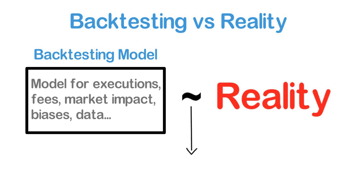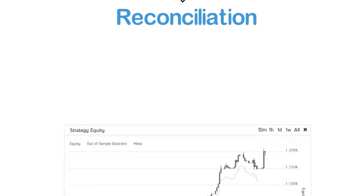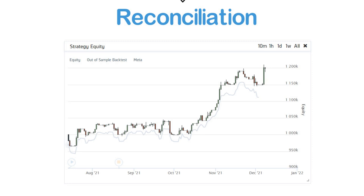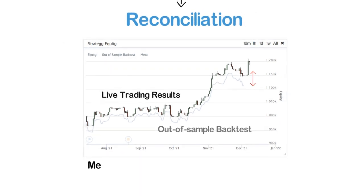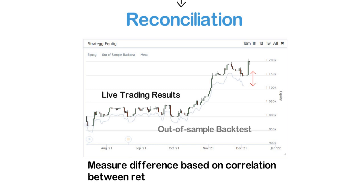The process of understanding this discrepancy is called reconciliation. QuantConnect's live trading page displays the actual performance of your algorithm and a so-called out-of-sample backtest performance. The out-of-sample backtest simply is a backtest that was performed over the same period as that of the live trading performance results. Obviously, this can only be done after letting the algorithm run on live data for a while. The closer these two performance plots are to each other, the more realistic your backtesting model of reality seems to be.